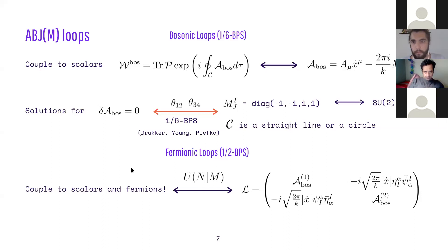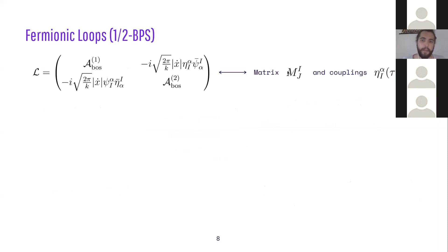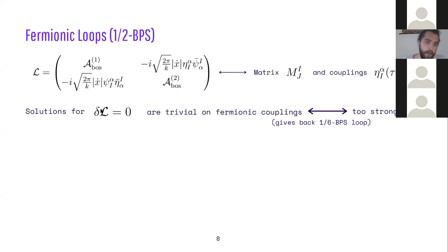Now we couple to the fermions and see what happens. We still have a matrix M as part of the ansatz, encoded via A1 and A2, and now we have couplings to the fermions parameterized by η and η̄ telling us the intensity of coupling to the Wilson loop depending on the contour τ. If you look for supersymmetry solutions annihilating this connection, they are trivial on the fermionic components because δ acts on each component independently. For the off-diagonal to vanish, η and η̄ must be zero, taking us back to the 1/6-BPS case — this constraint is too strong.